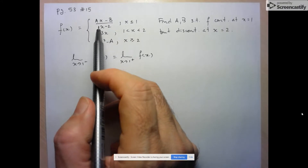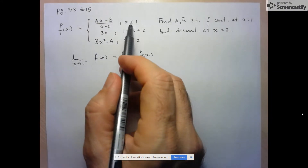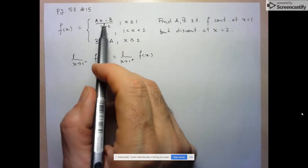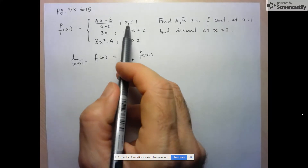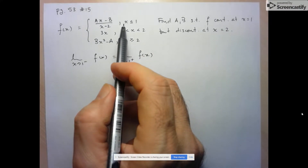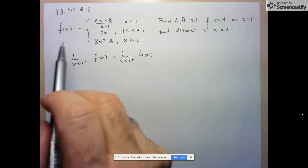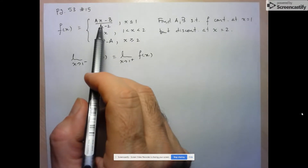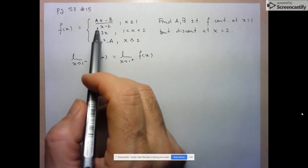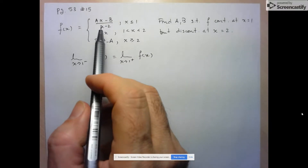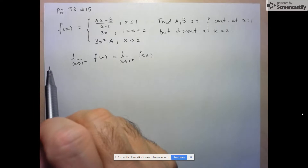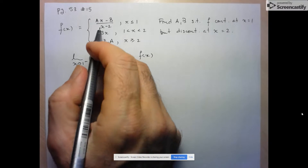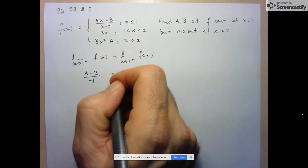As X approaches 1 from the left, I'm working with this expression here. There's a problem at X equals 2, but that's not part of this range of values, so I don't have to worry about it equaling 0 at 2 — I'm only looking to the left of 1. This function behaves perfectly nicely there, so we can just input X equals 1. We get A minus B over 1 minus 2, which is negative 1.